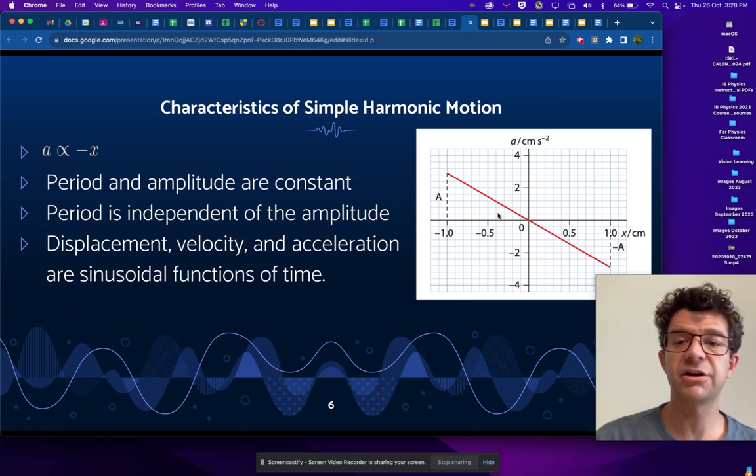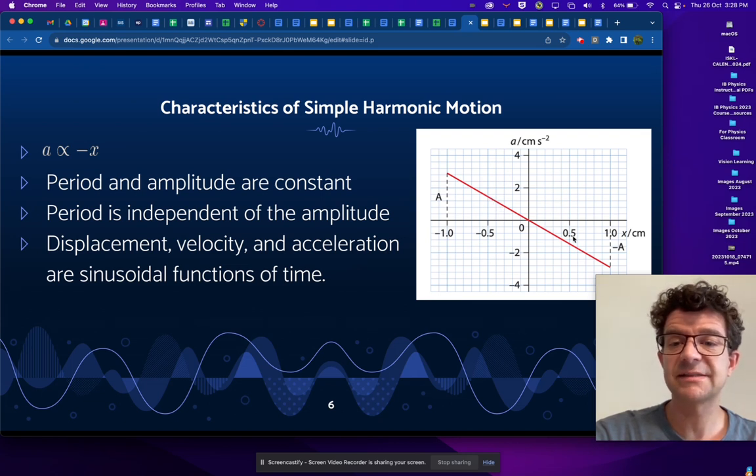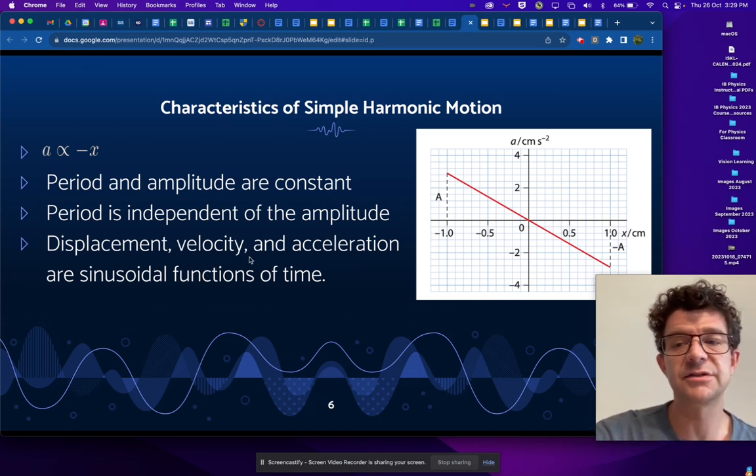And there are a few characteristics of simple harmonic motion. One is that the period and amplitude remain constant. So if you displace the object to the left one centimeter, it will accelerate towards the right, will receive no force at equilibrium, but then it will translate all the way over to positive one centimeter and move back and forth. If you were to displace it less, the period of motion would remain the same. Simple harmonic motion period does not depend on the amplitude, only on some geometry factors. And we'll see displacement, velocity, and accelerations will all show sinusoidal functions with time.